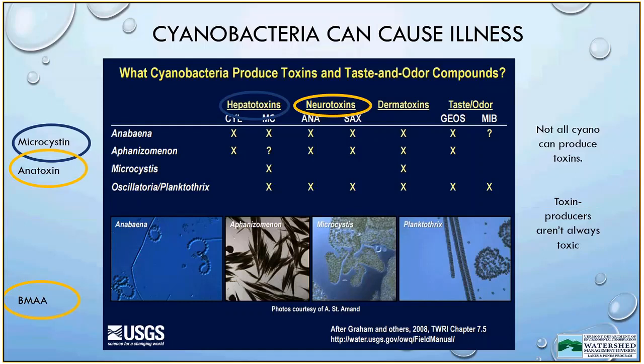This slide from the USGS shows the kinds of toxins that can be produced by cyanobacteria. Hepatotoxins, circled in blue, include two main types: cylindrospermopsin and microcystin. Microcystin is commonly detected in Vermont, and hepatotoxins directly affect the functioning and health of your liver. Neurotoxins — anatoxin and saxitoxin — affect the nerves; anatoxin has been detected occasionally in Vermont. Dermatoxins affect the skin and can cause skin irritation and rashes. Cyanobacteria are also known to cause taste and odor problems in drinking water.